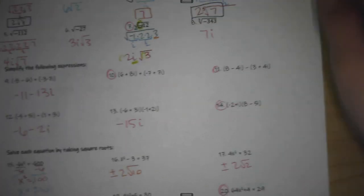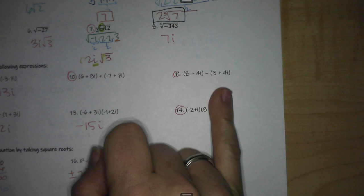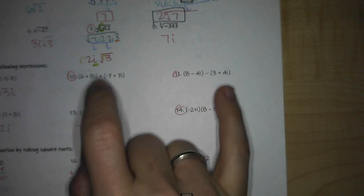Let's look at number 10 and 11. It says simplify these expressions. These are adding and subtracting complex numbers.